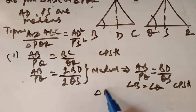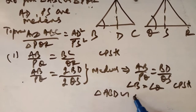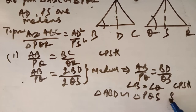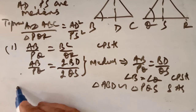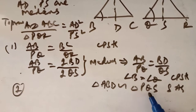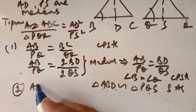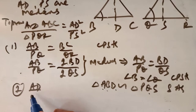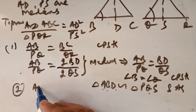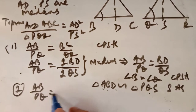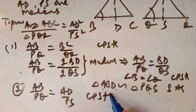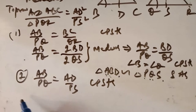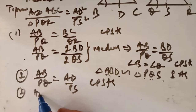The smaller triangles ABD and PQS are similar by Side-Angle-Side. Therefore AB/PQ = AD/PS — corresponding parts of similar triangles are proportional. We now know that AB upon PQ is equal to AD upon PS.